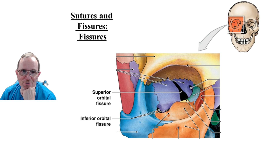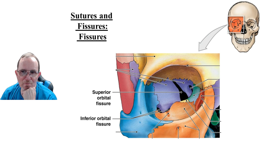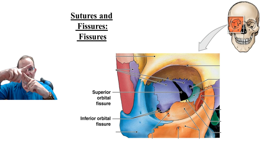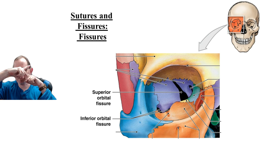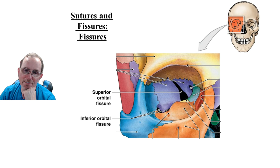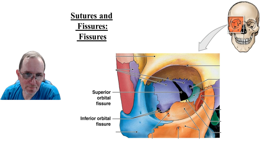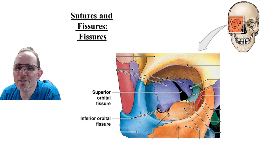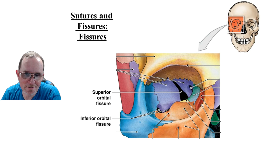The two fissures are the superior orbital fissure and the inferior orbital fissure — they look like a V-shape coming off the eye with the wide end pointing laterally. Right there would be the optic canal, which can be seen as a V-shape on our models.